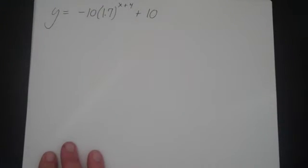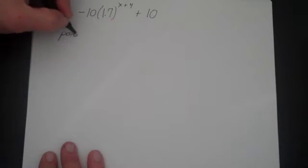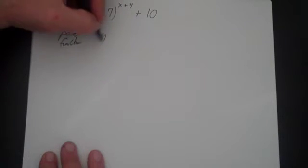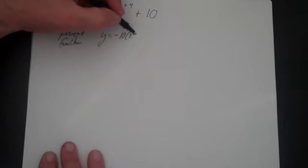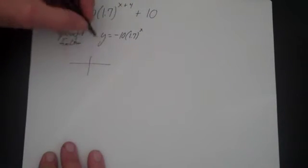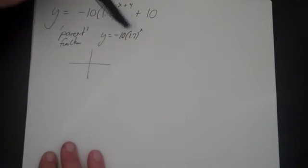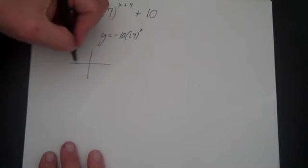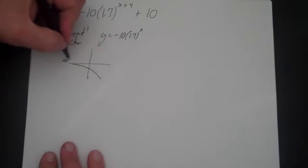Let's look at some quick examples. Let's do y equals negative 10 times 1.7 to the (x plus 4), plus 10. You can look at what I call the parent function: y equals negative 10 times 1.7 to the x. This is exponential growth but it's flipped, so it's going to look something like this, with the asymptote at y equals zero.